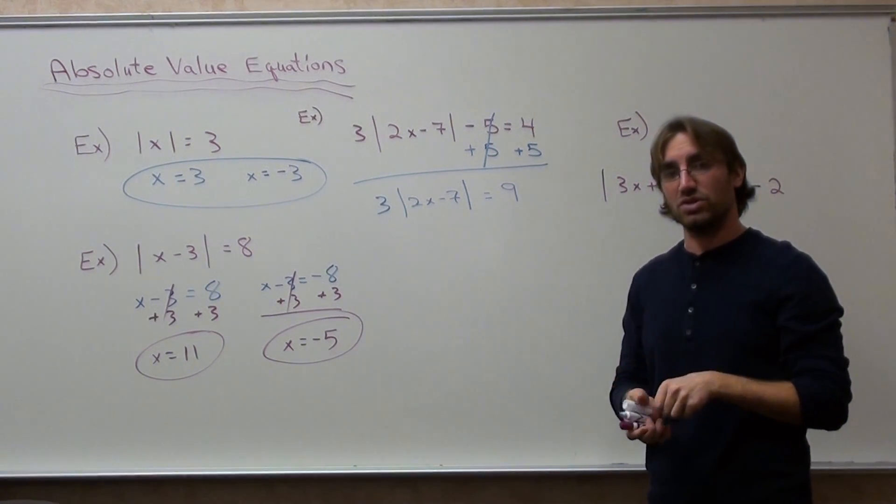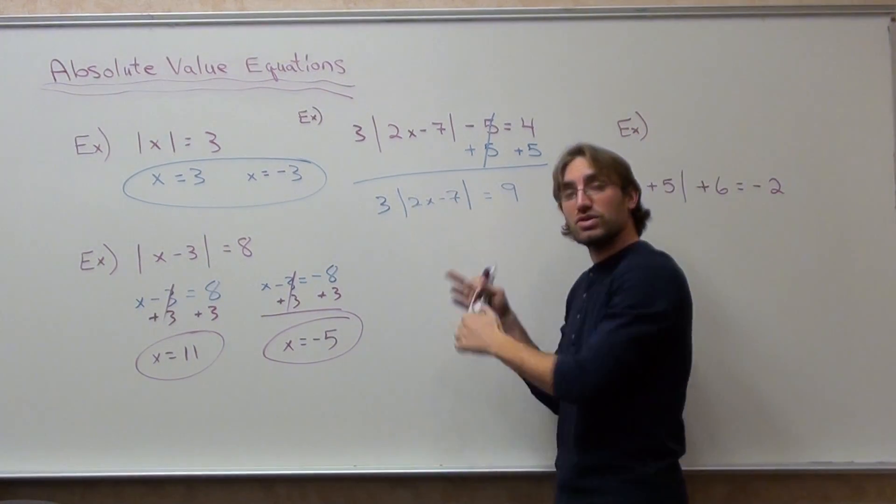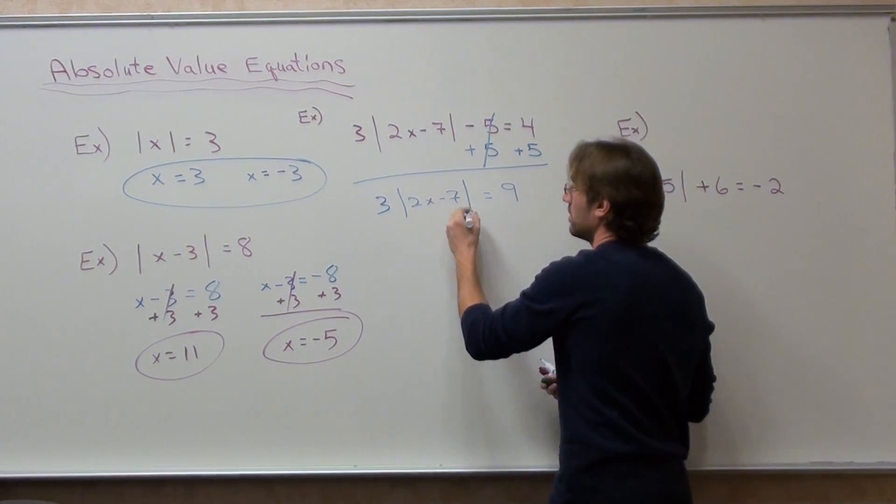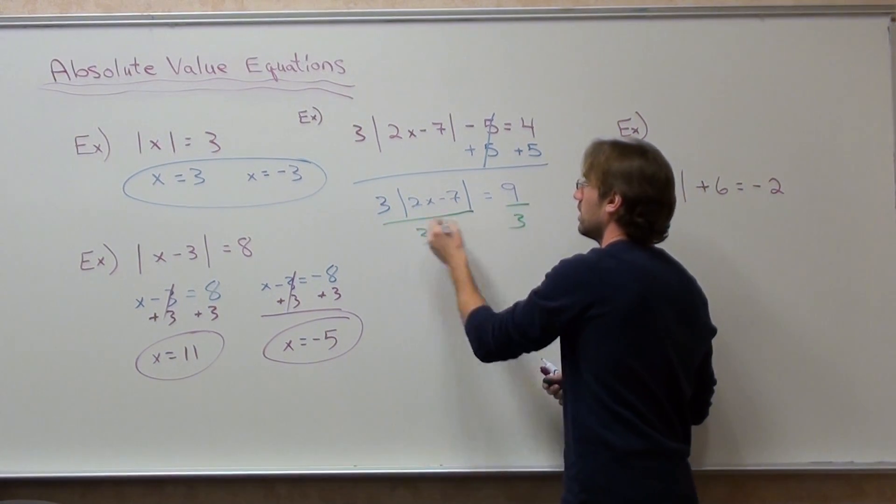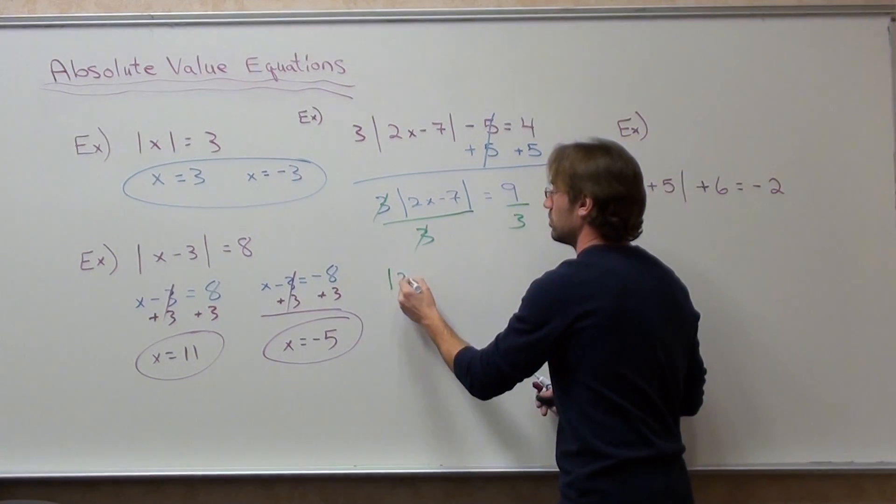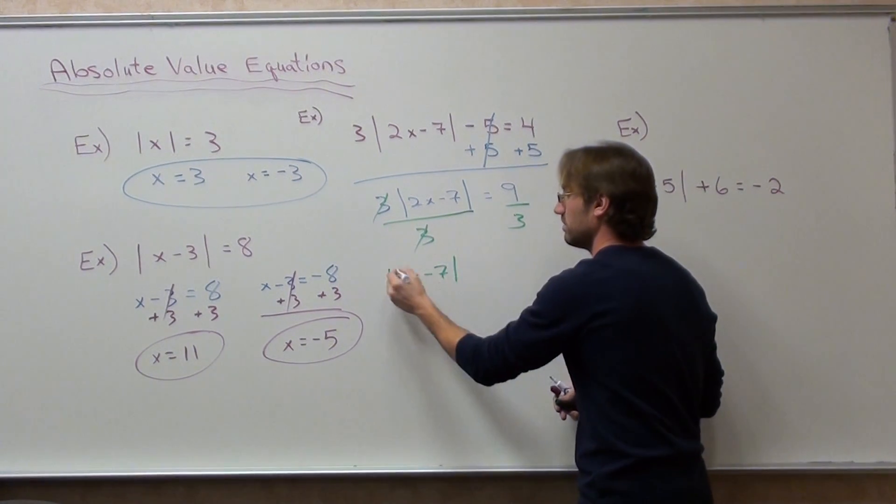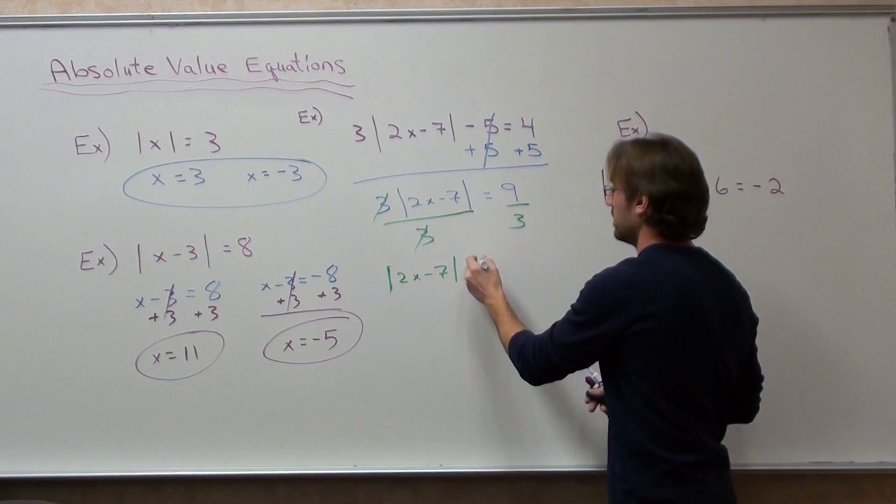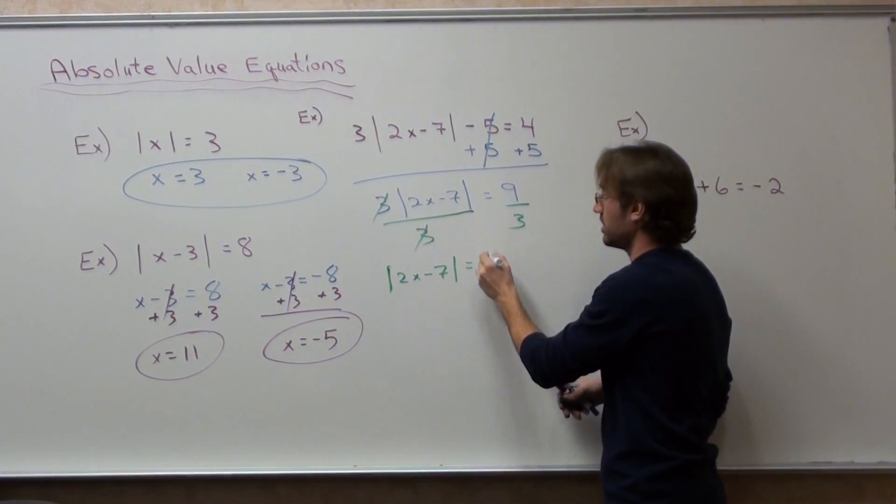Now what we want to do is we want to divide by three. I want just the absolute value by itself. Three divided by three is one. That's fine. I get two x minus seven in the absolute value sign is equal to nine divided by three, which is three.